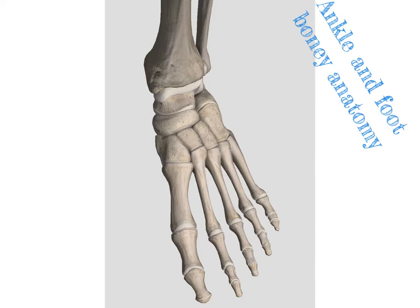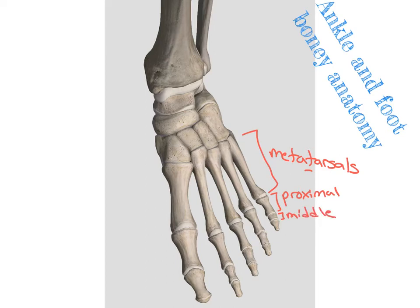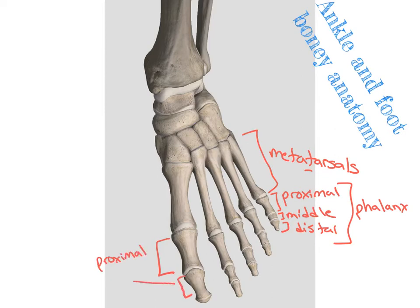As we look into the toes, just like we saw with the wrist, we have a middle section of bones called our metatarsals — the T is for toes. Then we move up into our phalanges. The first row, just like with the fingers, is our proximal phalanges, then we have our middle and our distal. Each of those is labeled as a phalanx. When we look at our great toe, we only have a proximal and a distal phalanx.